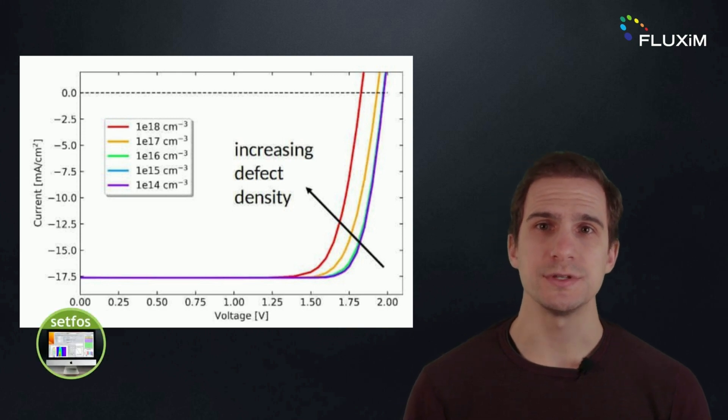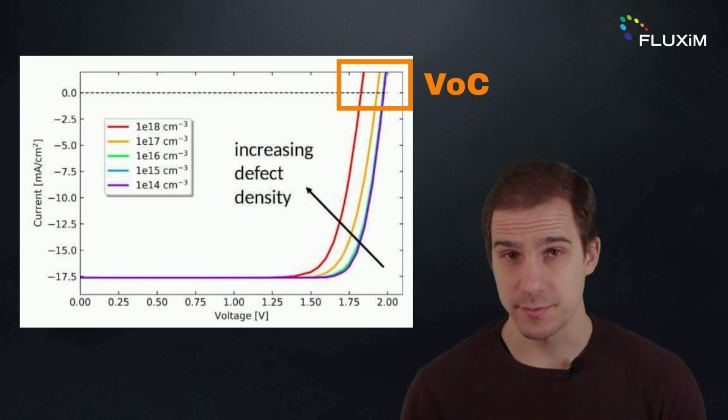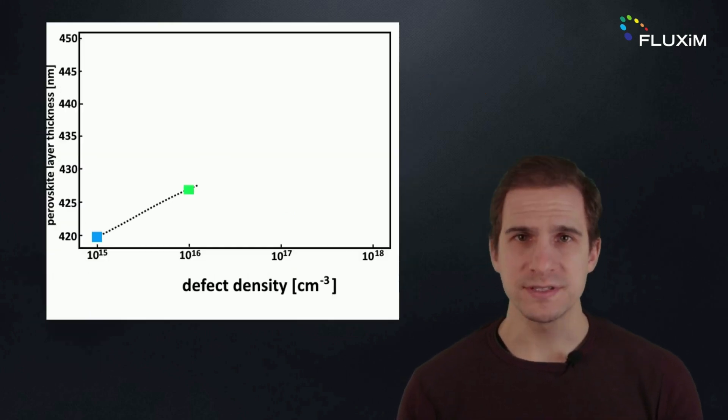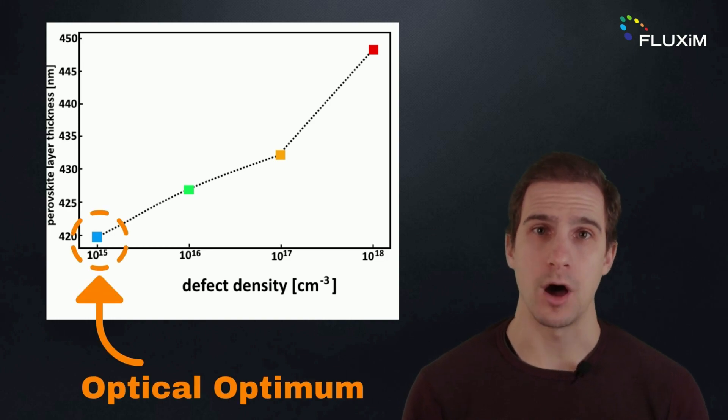Electrical simulations with Setfos show that with increasing defect density at the perovskite interfaces, the open-circuit voltage is strongly affected, as expected. To compensate for the loss of carriers, the perovskite thickness should be increased by up to 30 nanometers from the optimal thickness value inferred from optical simulations.